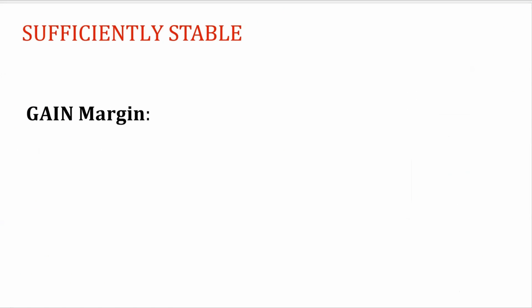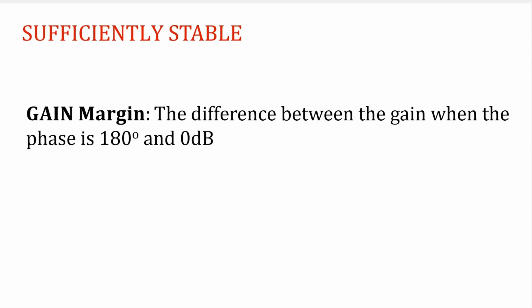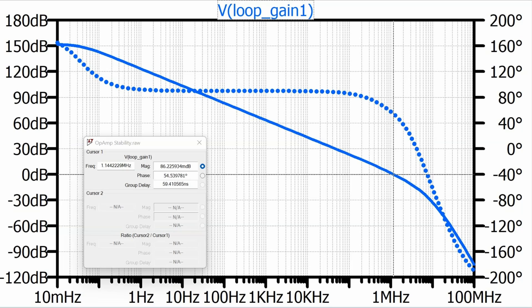The second measure for looking at a sufficiently stable system is called the gain margin. And the gain margin is the difference between the gain when the phase is at 180 degrees and zero dB.